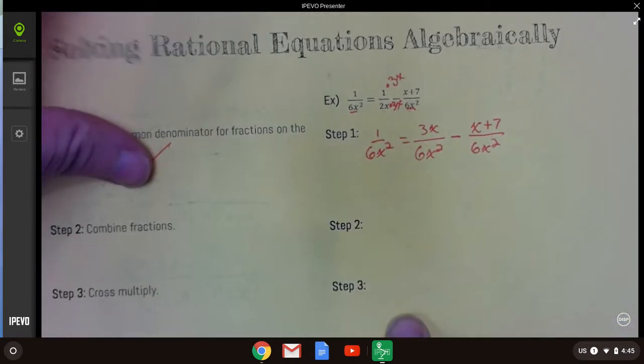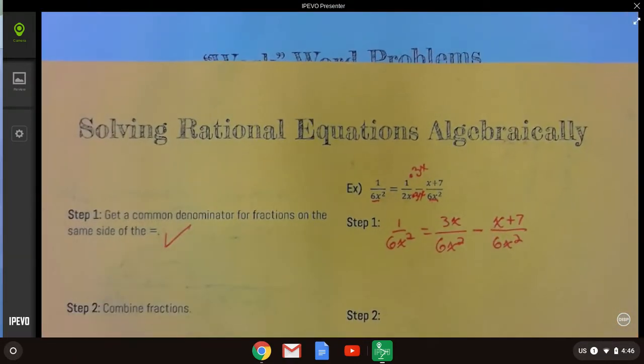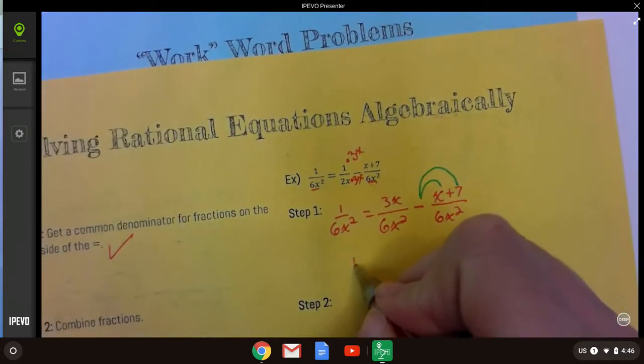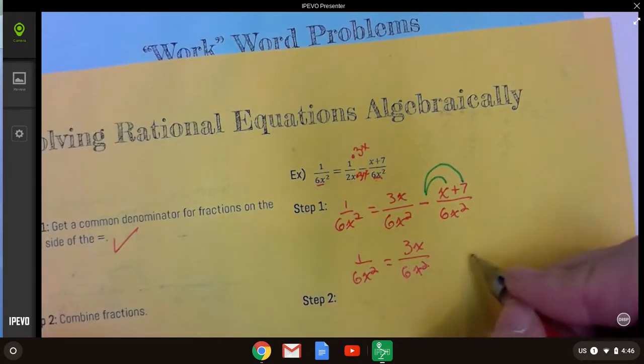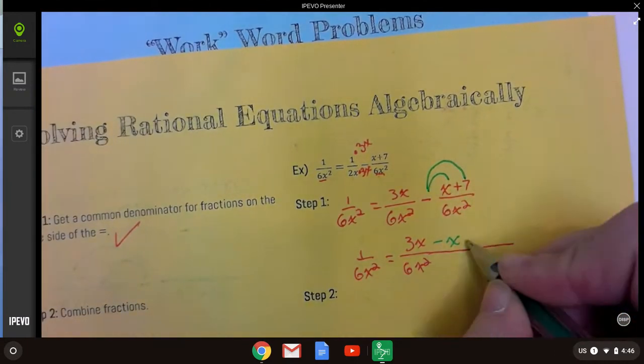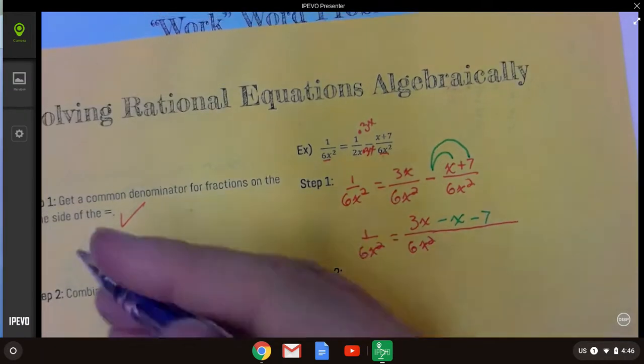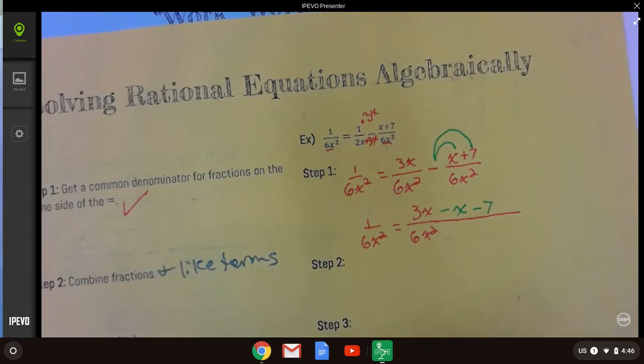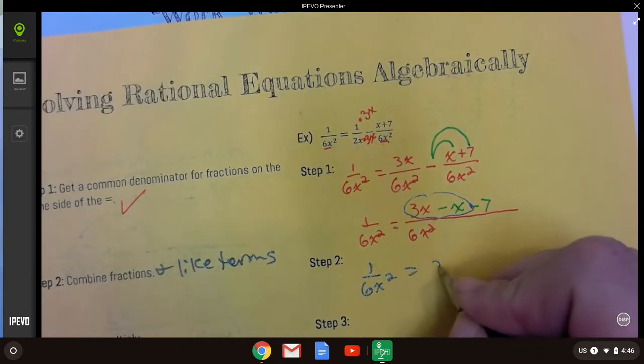Next step, we're going to combine fractions. Again, just like we did here. Same thing. Combine your numerators. Now, remember what to do. When it's a subtraction, you've got to distribute that negative sign. So, don't forget that. I got 1 over 6x squared equals 3x over 6x squared. I should have written that more towards the middle, but that's all right. So, negative x and then negative 7. Okay. And at that point, if you have any like terms, go ahead and combine them because you don't want to have to mess around with all that later. So, I've got 1 over 6x squared equals, and then these are my like terms. 3x minus x is 2x minus 7.